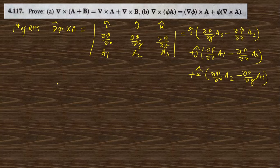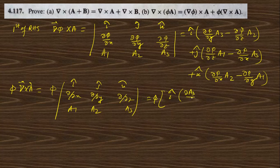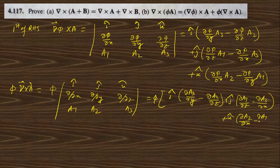The second term on the right-hand side is φ · curl(a). We compute curl(a) in determinant form and multiply by φ, giving: φ[î(∂a3/∂y − ∂a2/∂z) + ĵ(∂a1/∂z − ∂a3/∂x) + k̂(∂a2/∂x − ∂a1/∂y)].